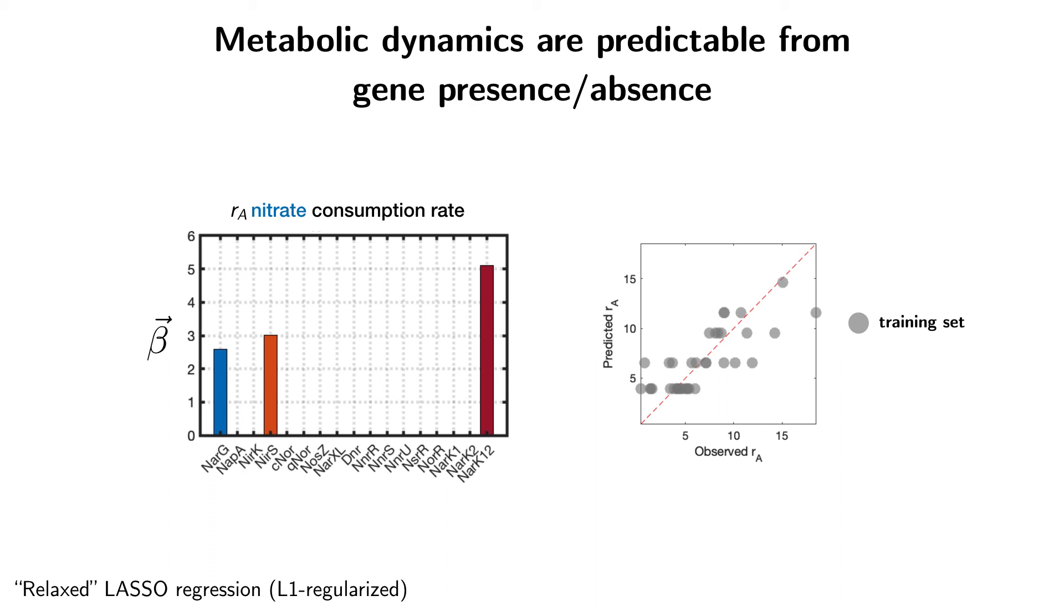We find that the L1 regularized method produces a sparse model which only needs three variables to predict the nitrate consumption rate RA. The scatter on the right is showing the correspondence between the observed values and the values that are predicted by this regression model in the training set. We wanted to verify that this model is not overfitting to these training set data.